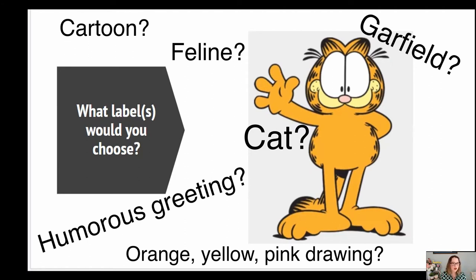Do you know how your users think about things when they're searching? Do you know what words they use when they're doing searches, or when they're doing their own tags on assets? I usually start there. What we're going to walk through is that you all use different verbiage to identify what this is. So out of all of those, which one would be the preferred label?